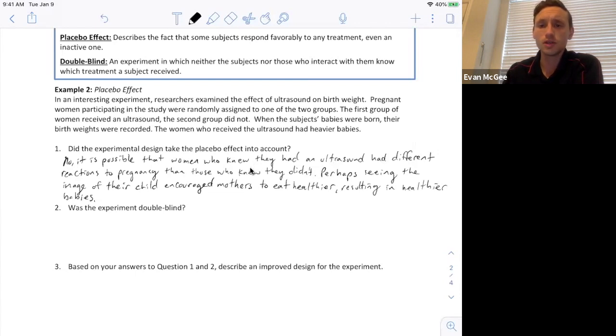So no, it didn't take into account the placebo effect because the women knew that they were having ultrasounds or they knew that they were not. And so the people that knew they were having ultrasounds maybe they reacted differently and maybe seeing the image of the child encouraged them to eat healthier and so they had healthier babies. The only way it could have taken into account this placebo effect is if some of the mothers thought they were receiving an ultrasound.